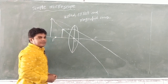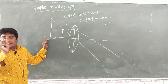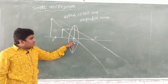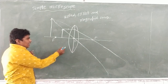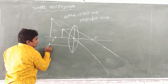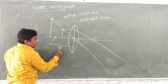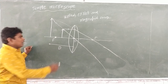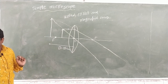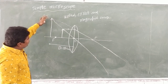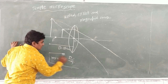The image is formed at the least distance of distinct vision from the optic center. The least distance of distinct vision is 25 cm — that is the standard value. The magnification formula we use is: M equals 1 plus D by F.